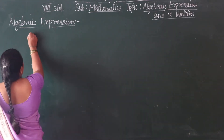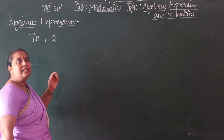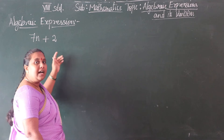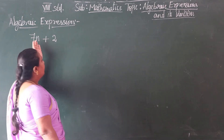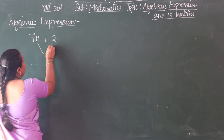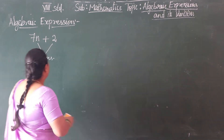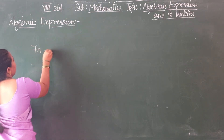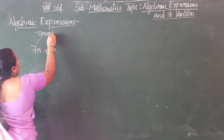Let us take a very easy example for you: that is 7n plus 2. So 7n plus 2 — this is an expression, it is an algebraic expression. In this we have terms. These two — 7n and 2 — we can say are the terms.